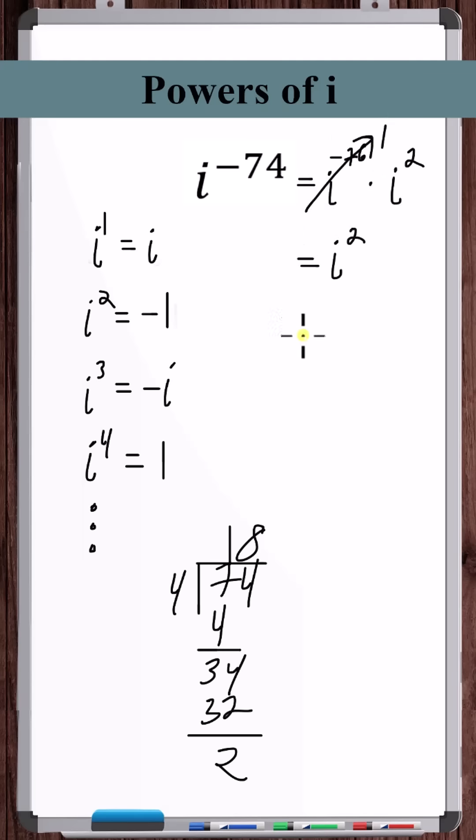So we're left with i squared, but i squared is negative one. So i to the minus 74 power is equal to negative one.